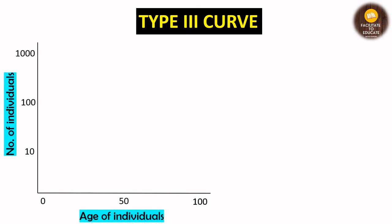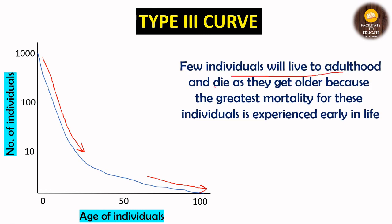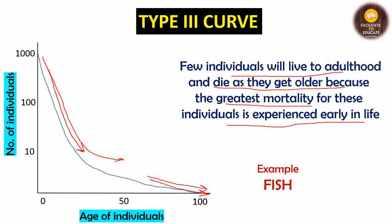The Type 3 curve is the opposite of the Type 1 curve. In early age, individuals have a high probability of dying, and very few will reach adulthood. Few individuals live to adulthood because the greatest mortality is experienced early in life — they die off in early or middle age. The example of the Type 3 curve is fish. Fish lay a large number of eggs, but very few survive till the end because of their high mortality rate at the start.